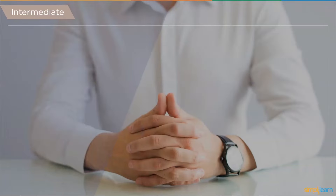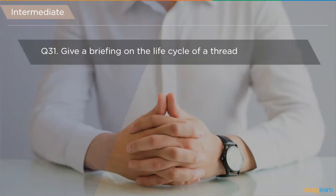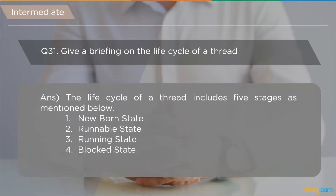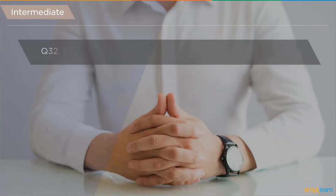The next question is: give a briefing on the life cycle of a thread. A thread's life cycle includes five stages: newly bound state, runnable state (JVM is notified the thread is ready to run), running state (thread is actively executing), blocked state (thread is waiting for input from another source), and dead state (thread is eliminated by the JVM after processing completes).